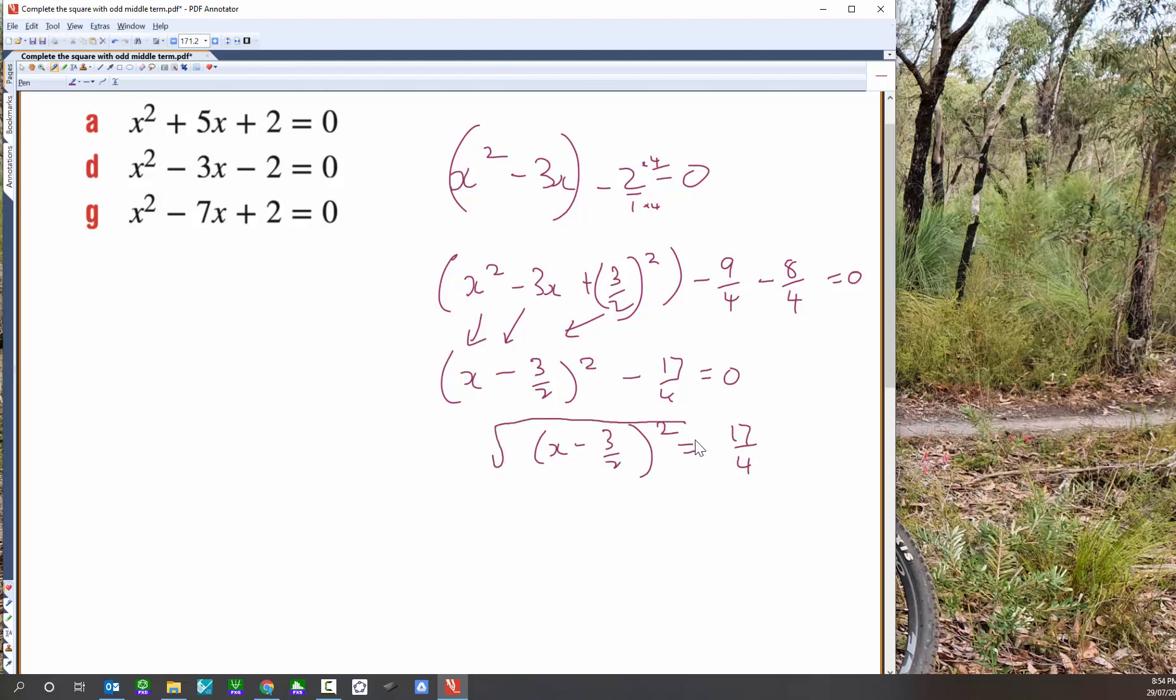To solve for x, we're going to root both sides. Recall that we're going to do the plus or minus. x take 3 on 2 equals plus or minus root 17 over 2. Root 17, root 4, which is equal to 2. And I've got x is equal to plus or minus root 17 on 2, plus 3 on 2.